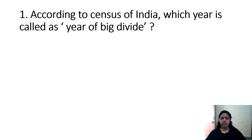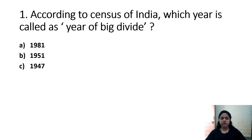According to the Census of India, which year is called the Year of Big Divide? Option A: 1981. Option B: 1951. Option C: 1947. Option D: 1921. Correct answer is Option D — 1921.